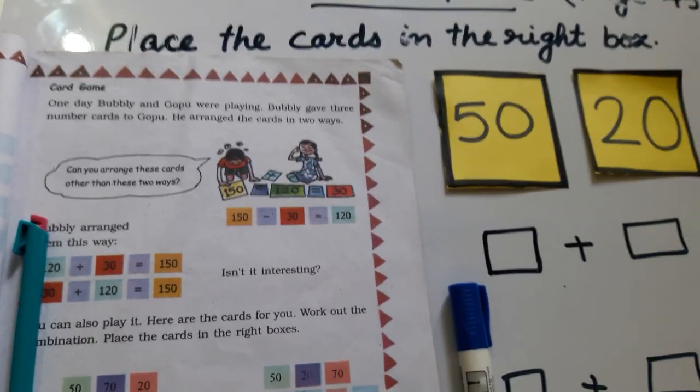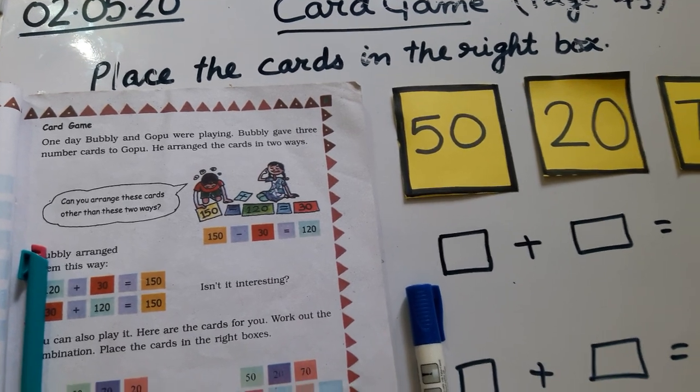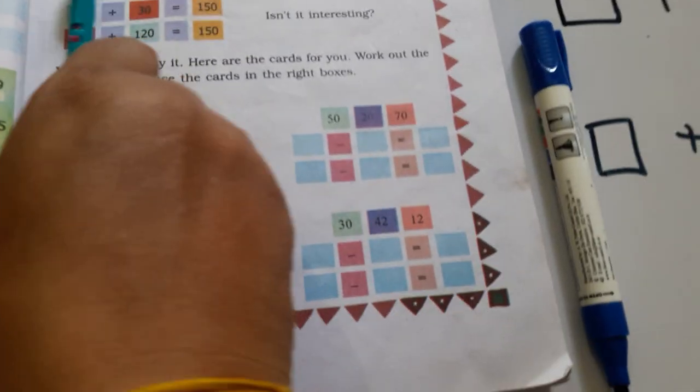Children, I am giving you the card game solution given on page number 45 of your Mathemagic Book 3. We will come here to the first part.